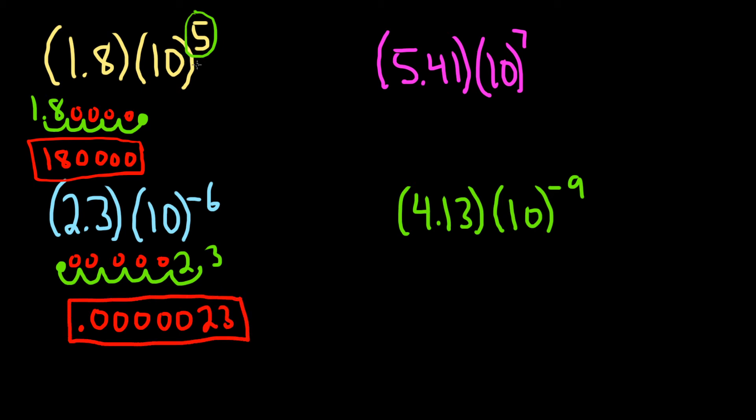So whenever it's 5, you go to the right five times from the decimal place. Whenever it's negative 6, you go to the left six times from the decimal place. Let's do this one over here.